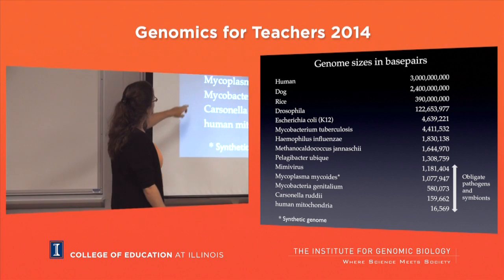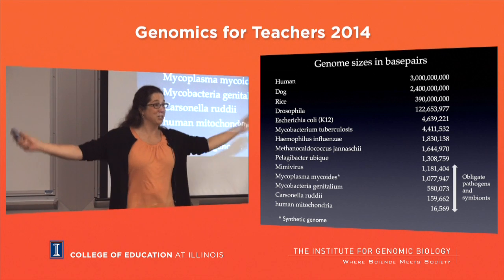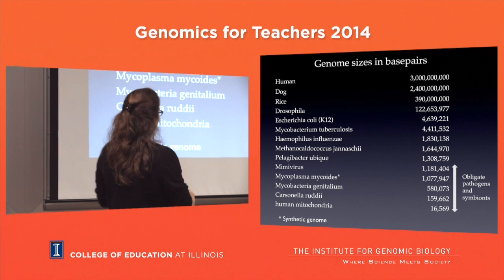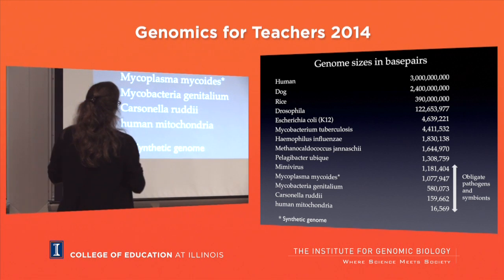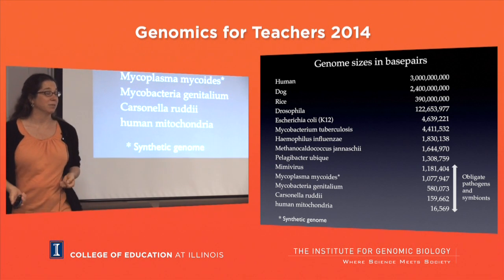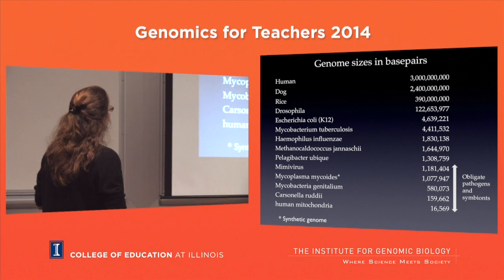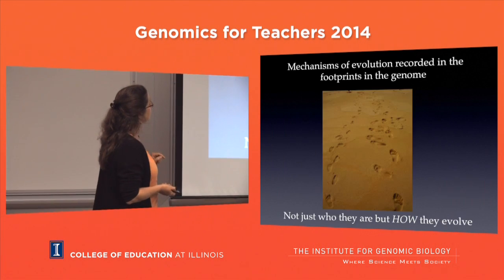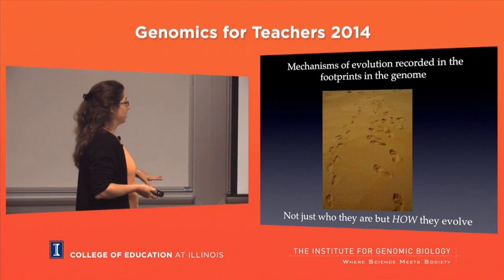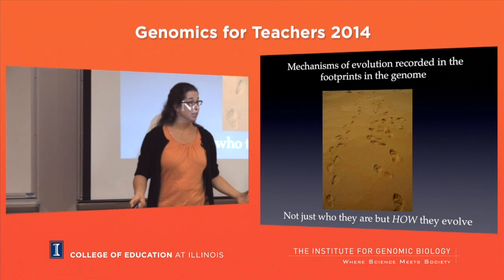Here is Mycoplasma mycoides - it is the first synthetic genome. Craig Venter did it. He took Mycoplasma, synthesized a genome, put it in Mycoplasma, and was able to get that cell to grow. It's the first synthetic genome of a free-living organism. The mechanisms of evolution are recorded in the footprints of the genome. It's not just who they are but how they evolve that we can get to now by looking at genome sequences - we can look at the whole genome and how it evolves.